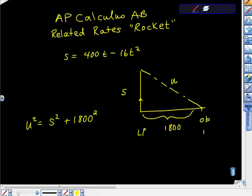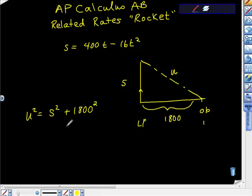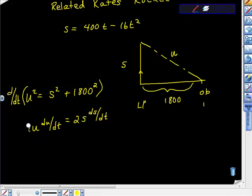I'm going to find the derivative with regard to time of the whole thing. That would give us 2U du/dt, using the chain rule, equals 2S ds/dt. The derivative of a constant is zero. Dividing both sides by 2, we get U du/dt equals S ds/dt. What we want to know is how fast is the distance between the rocket and the observer changing as a matter of time, so we want du/dt.